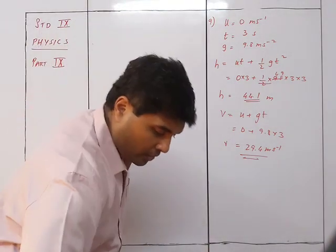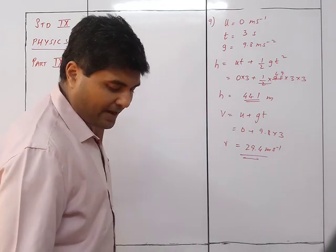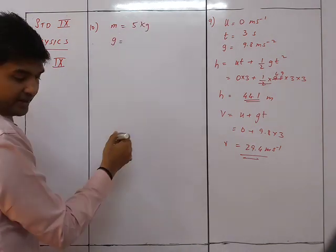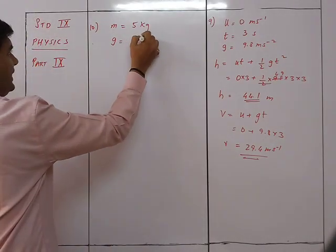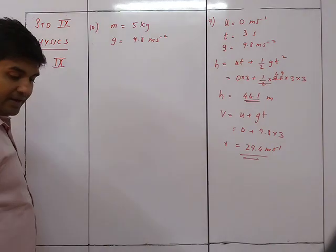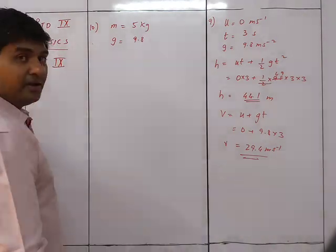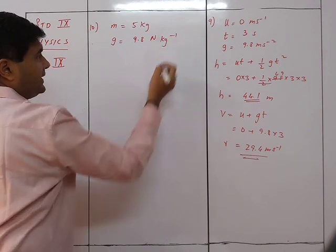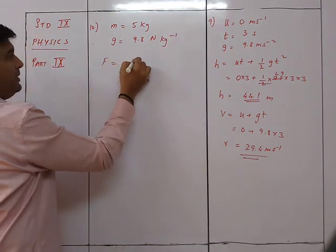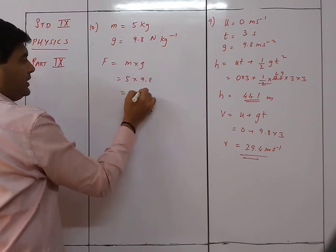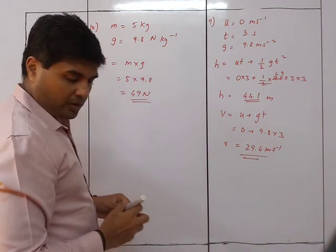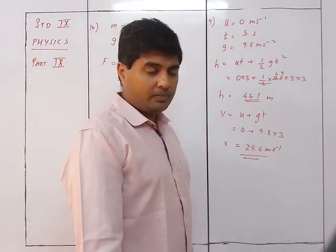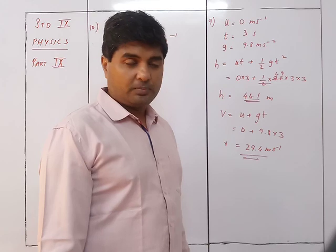Question 10: What is the force in newton your muscle needs to apply to hold a mass of 5 kg in your hand? Mass = 5 kg, g = 9.8 m/s². Force = m·g = 5 × 9.8 = 49 newton. So 49 newton is the force that needs to be applied to hold a body of mass 5 kg.